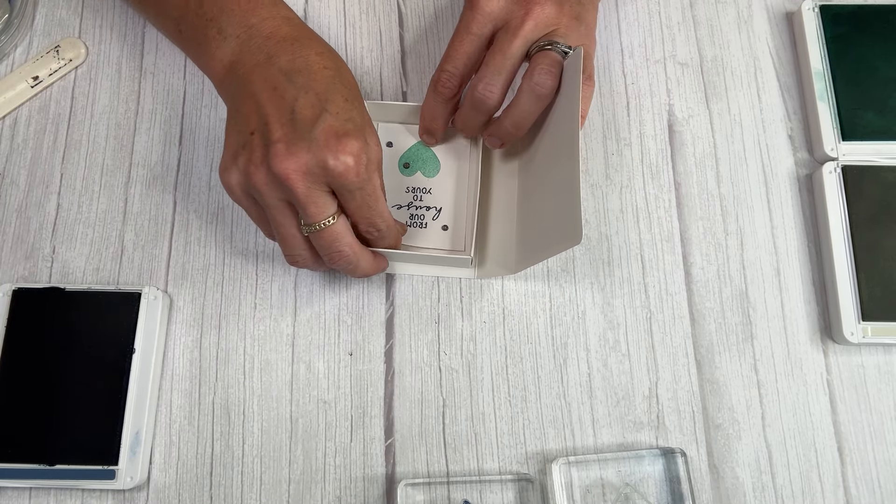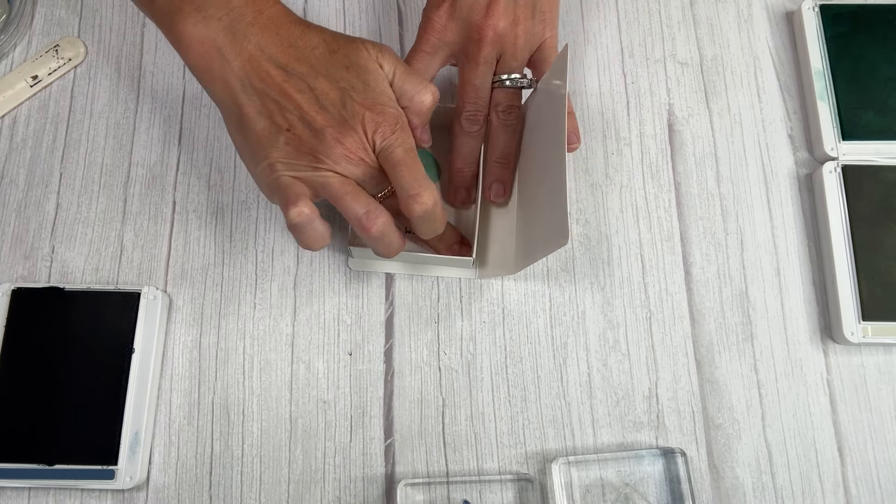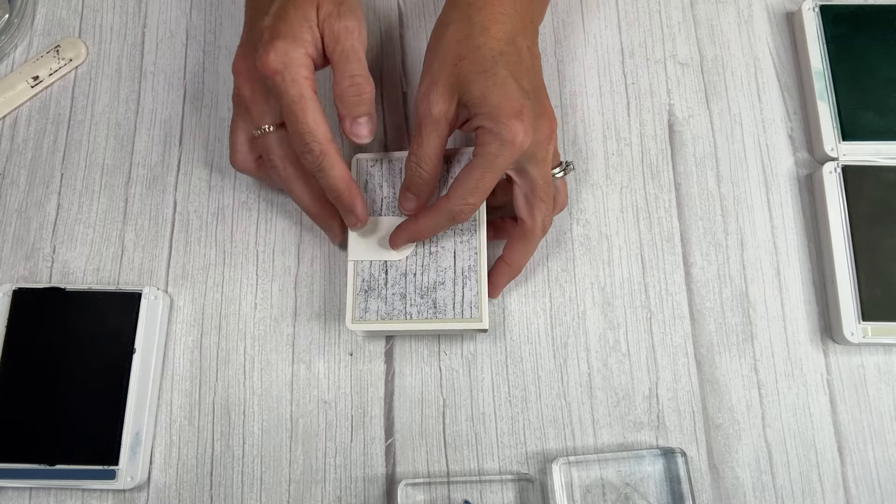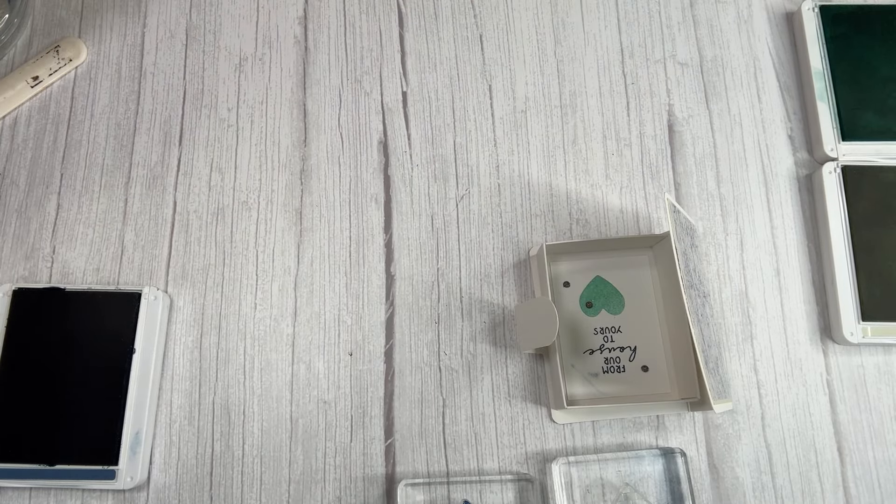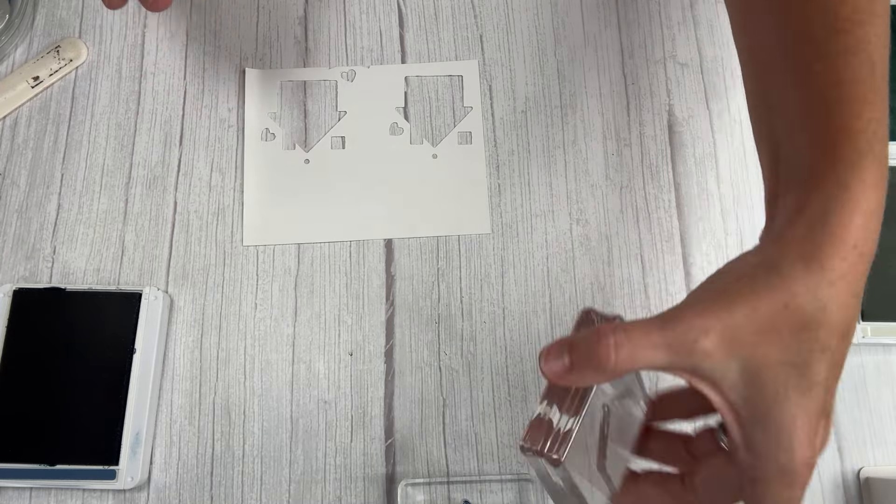And this is going to get put right on the inside. How fun is that? So when they open it, it's there on the inside. And again, I got some more ink on that. Yours will not have ink. All right. Next, take a scrap piece of white paper. We're going to stamp our house.